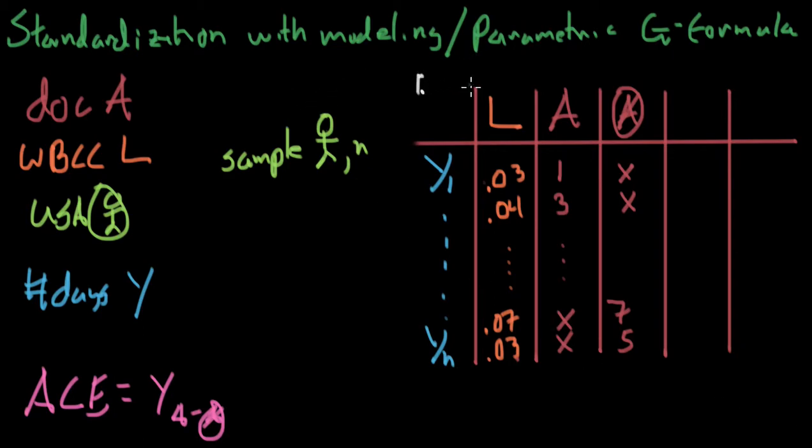We simply take our values that we have right here - treated, non-treated, the value of white blood cell count, and then the value of the actual outcome, the value of Y - and we feed them to our sample. Once we have our sample, we can use our sample and feed its input into a model. And the model that we talked about last time was linear regression.